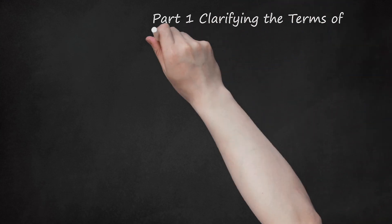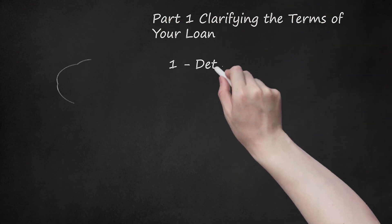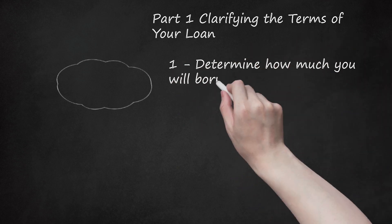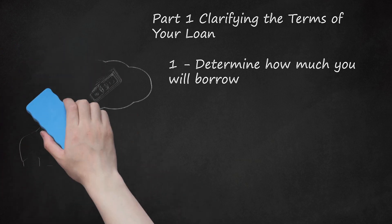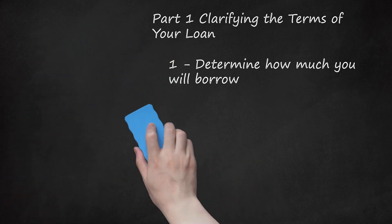Part 1: Clarifying the Terms of Your Loan. Step 1: Determine how much you will borrow. Typically, buyers will make a cash down payment on their new car and borrow from a lender to cover the remaining cost. This borrowed amount, known as the principal, will serve as the basis for your car loan. Keep in mind that you should put as much money down as possible to minimize the amount borrowed and reduce your finance charges.